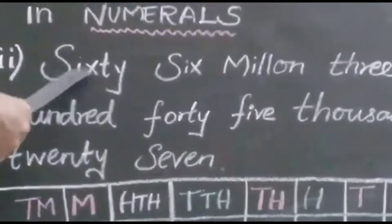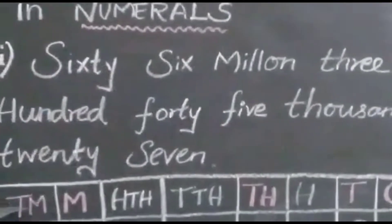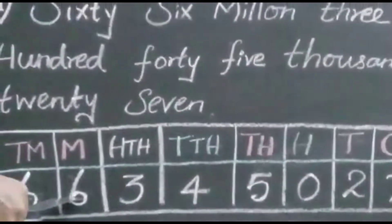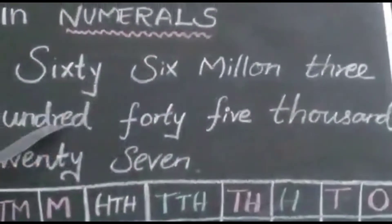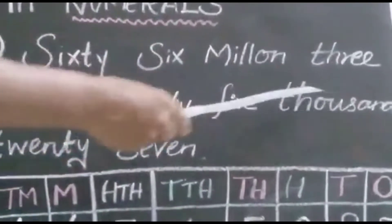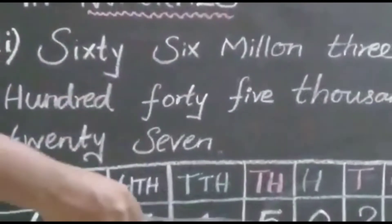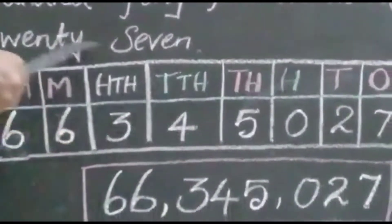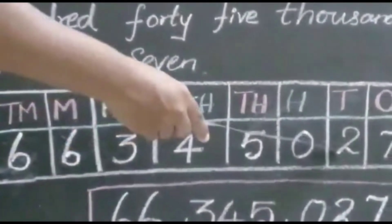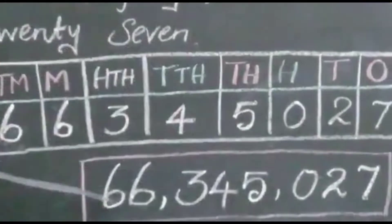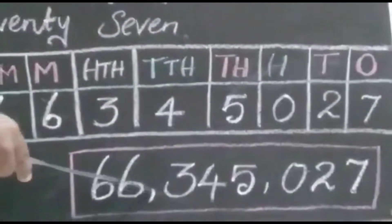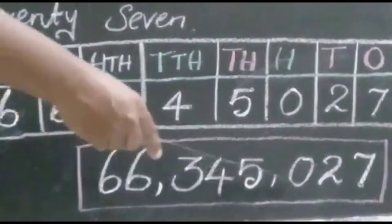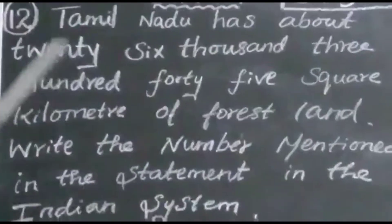Here the question is 66 million. So this is the million place — write 66 here. Next, 345,027 — write 345,027 here. So the answer is 66,345,027.